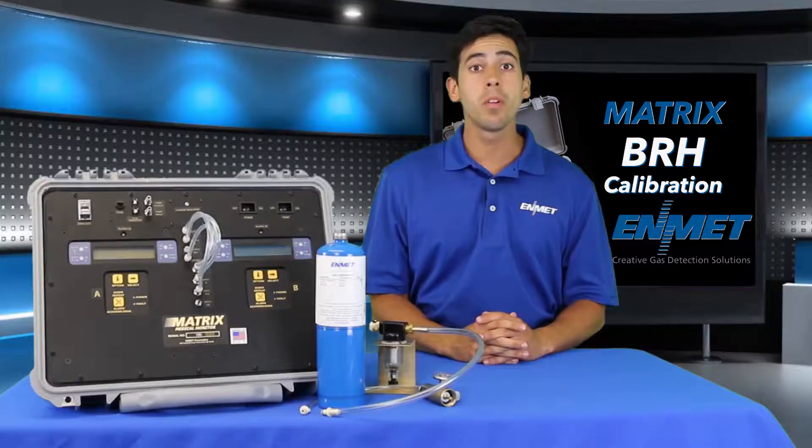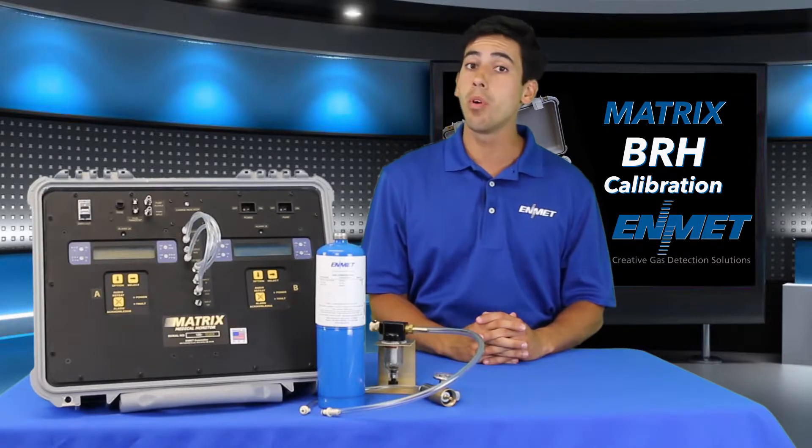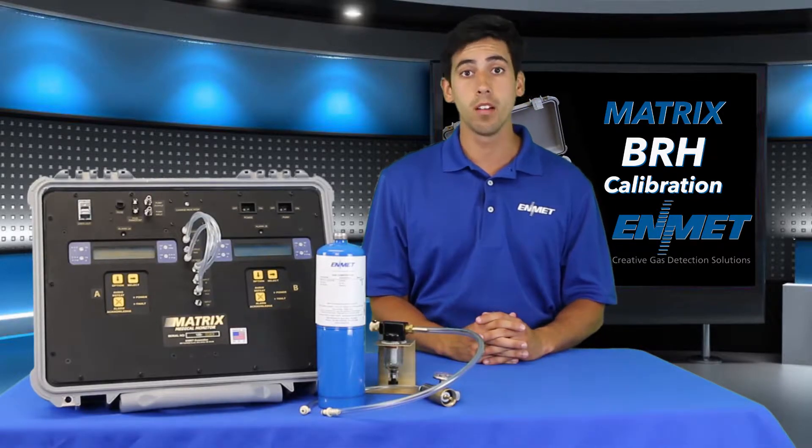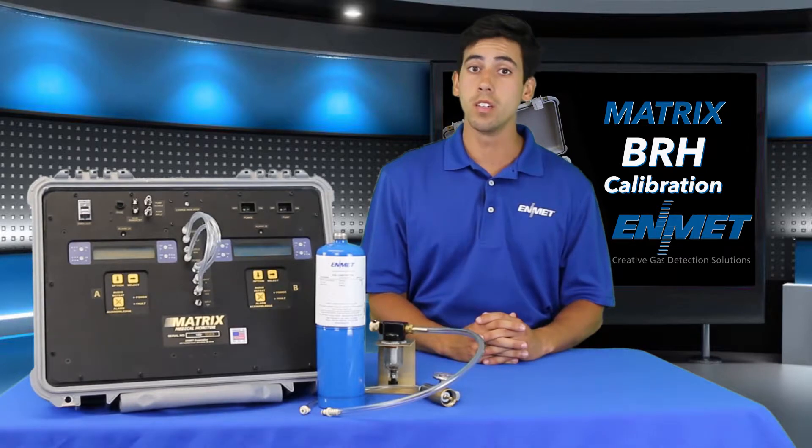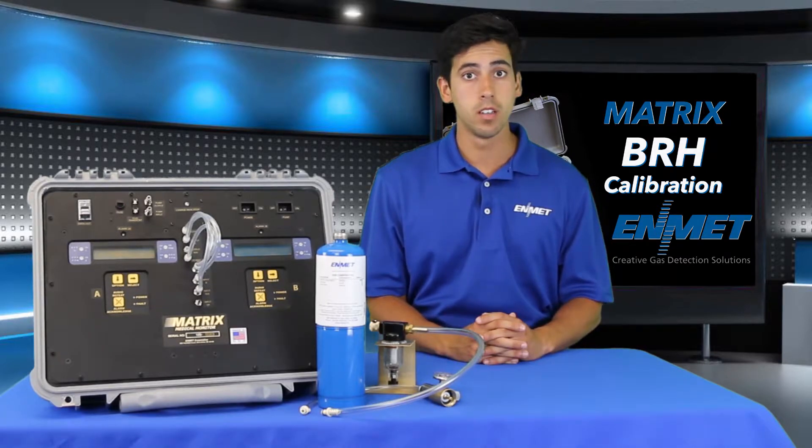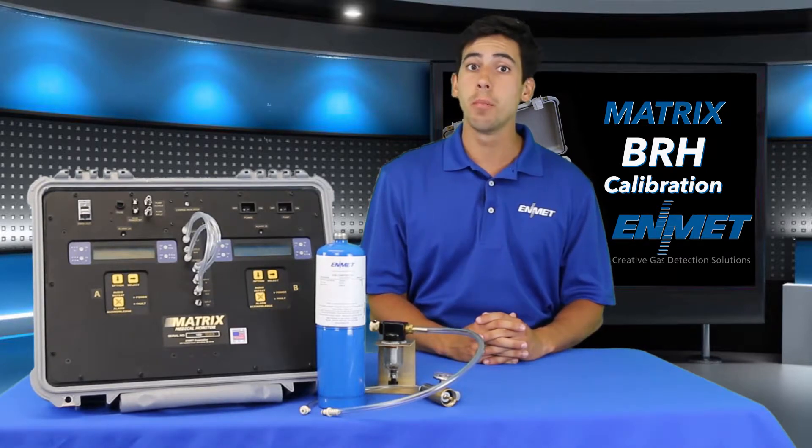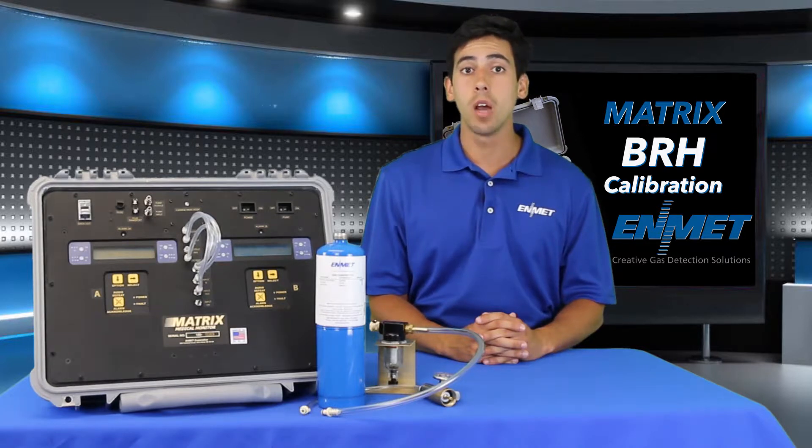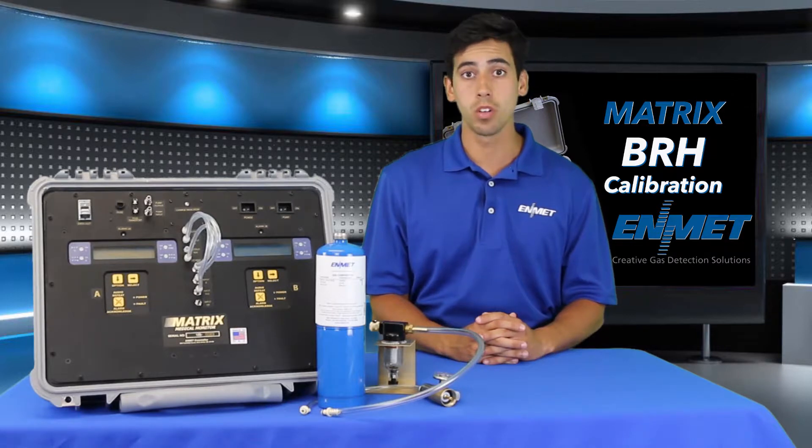You need to attach the bubbler assembly between the input port A and the compressed air line which must be regulated to half a liter per minute. Alternatively, if your matrix is supplied with an onboard sampling pump, this may also be used as your supplied air source.